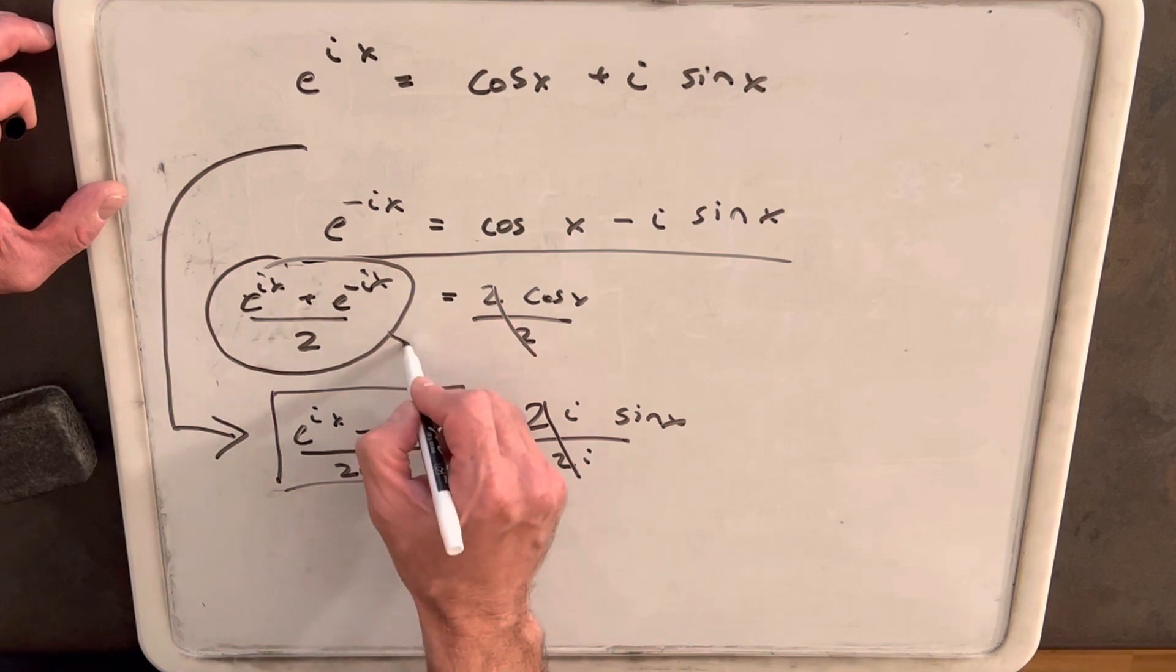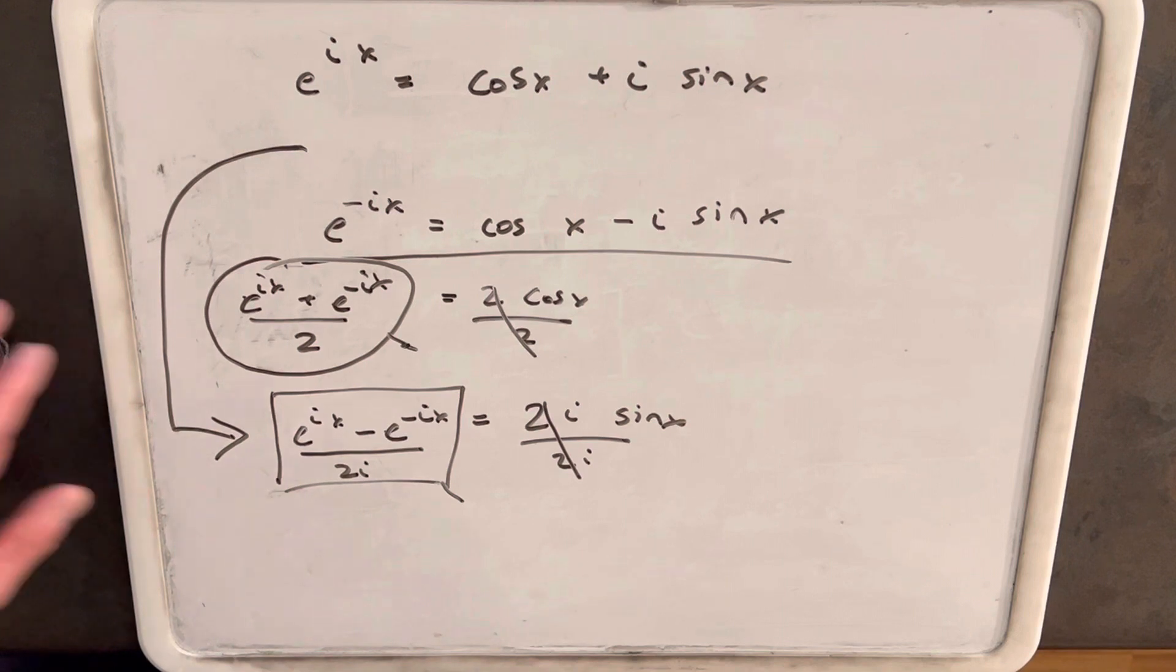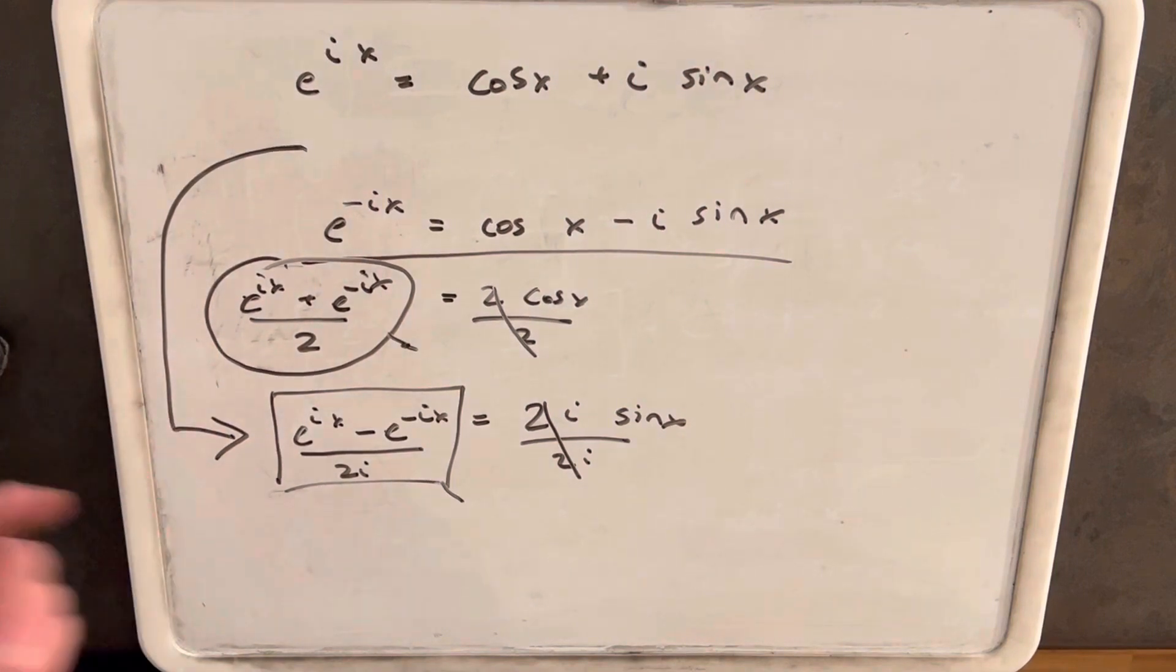And that's going to give us our complex value for sine x. So this was our original integral here, and this was our result. I just think it's kind of amazing to do this integral in complex form, and you come up with the right answer, you integrate cosine, and you get sine.